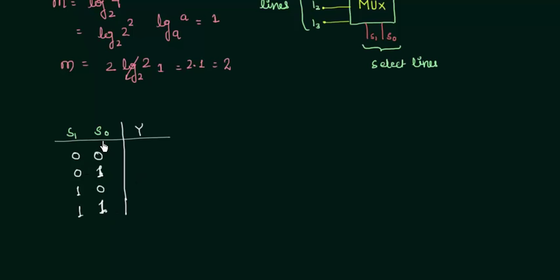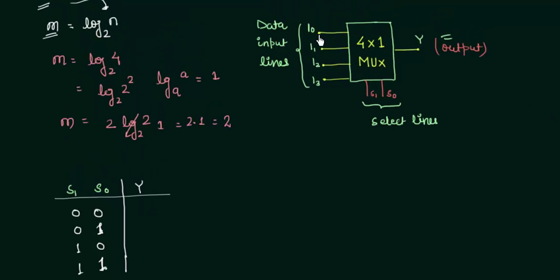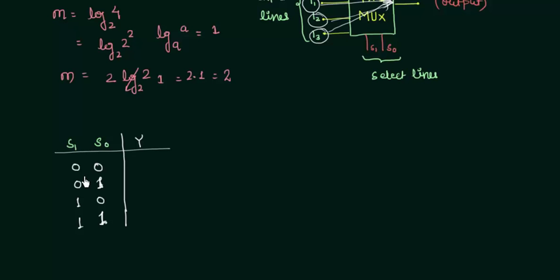Now when the values of S0 and S1 is 0 0, the Y is equal to I0. It is linked to the output Y. Similarly when S1 and S0 is 0 1, I1 will be linked to the output, for the last 2 cases. So in this case I am having I0, I1, I2 and then I3.